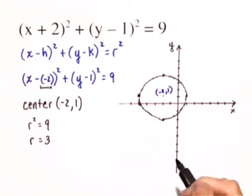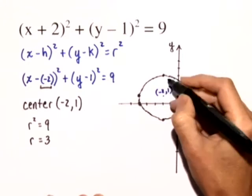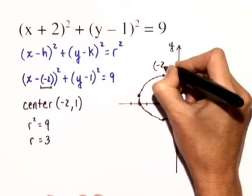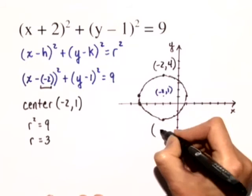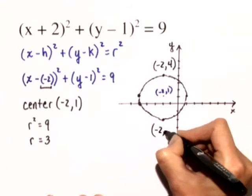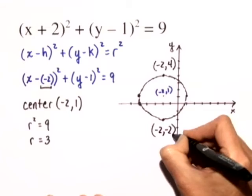So when I went up 3 units, I really went up to negative 2, 4. And when I went down 3 units, I really went down to negative 2, negative 2.